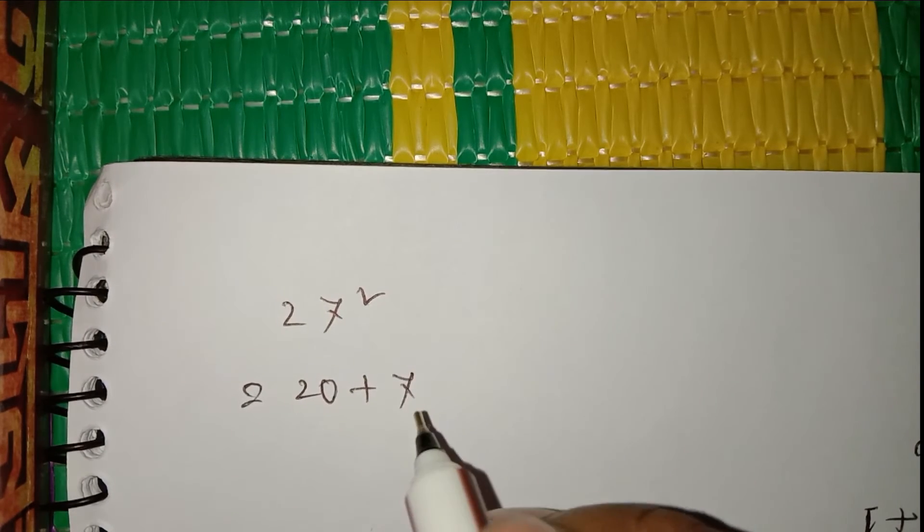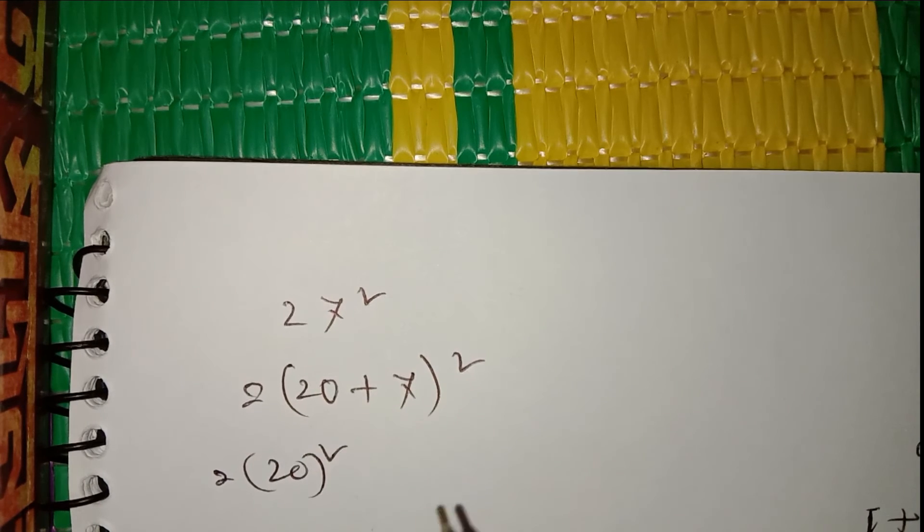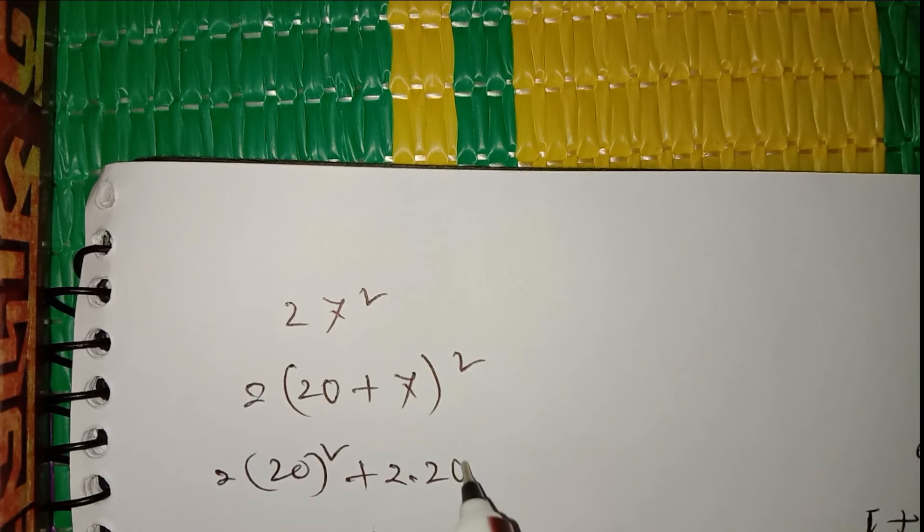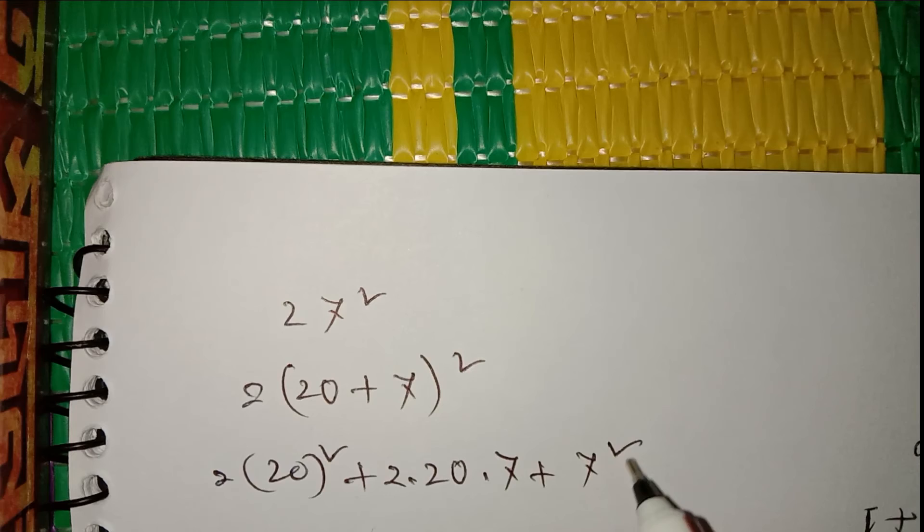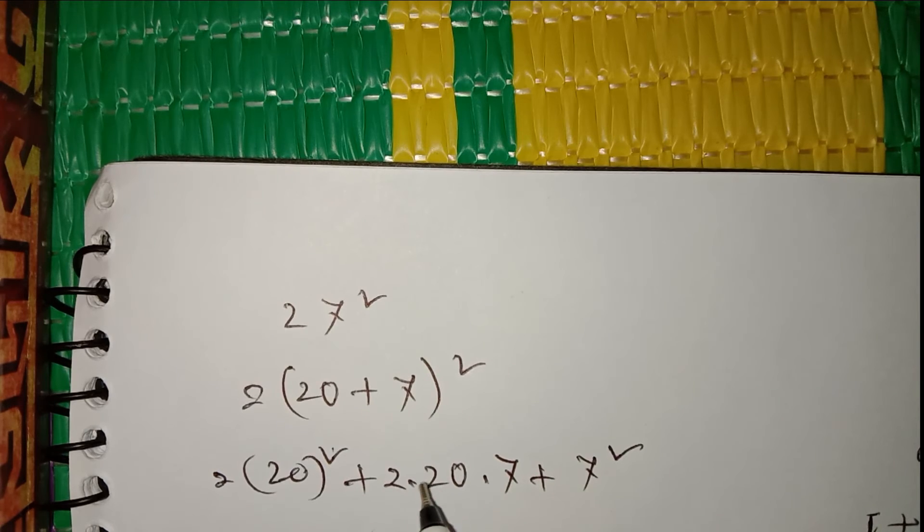That means 2ab plus b square, that means 7 square. 2 times 400 will be 800, 2 times 4, 4 times 7 is 28.